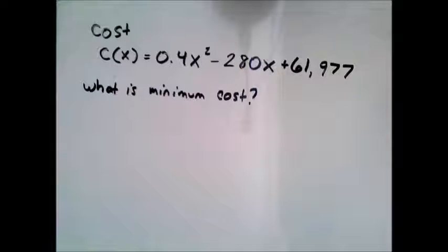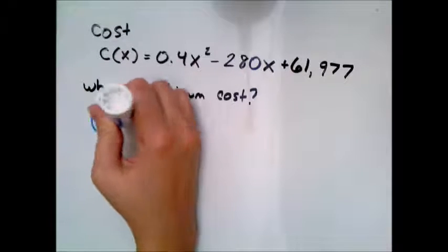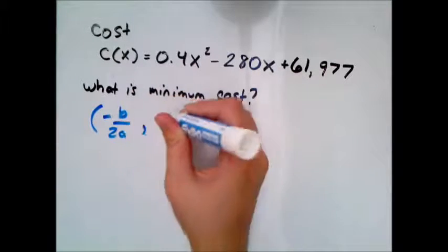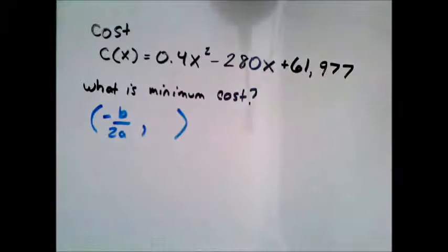The easiest way to find the vertex is to remember that the x value of the vertex is always at negative b over 2a. So if I have this in the right form, I can say what's a and what's b and just put them in here.